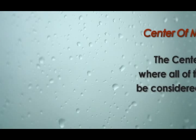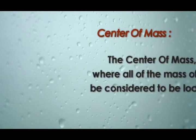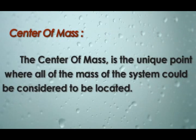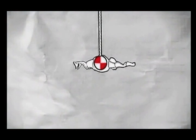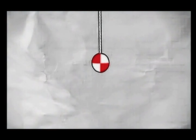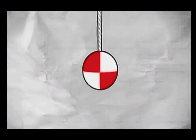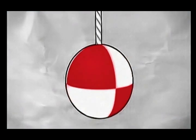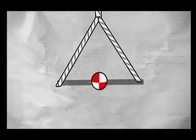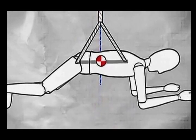What is the center of mass? In physics, the center of mass is the unique point where all of the mass of a system could be considered to be located. For a solid body, it is often possible to replace the entire mass of the body with a point mass equal to that of the body's mass. This point mass is located at the center of mass.